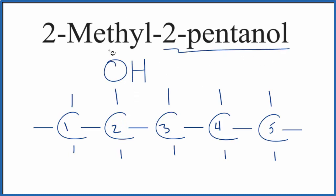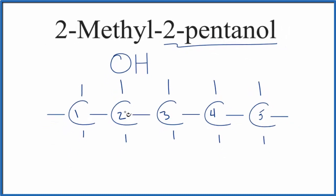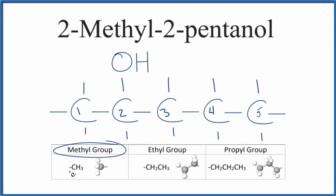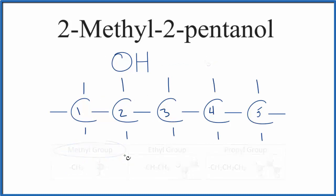But we have this methyl group here. That's going to be on the second carbon as well. The methyl group, that's just CH3, carbon with three hydrogens around it. And we're going to attach that to the second carbon in 2-methyl-2-pentanol. So let's put it down here. And this is the structural formula for 2-methyl-2-pentanol.